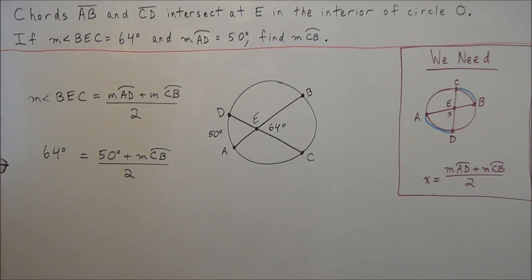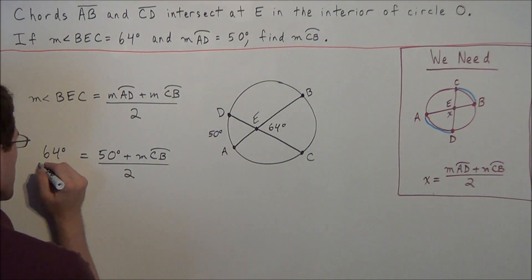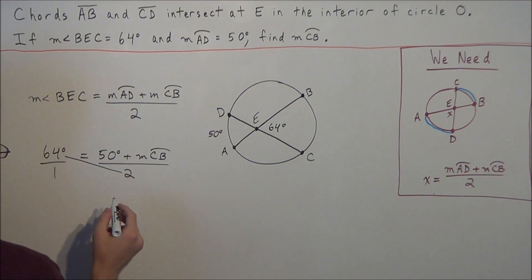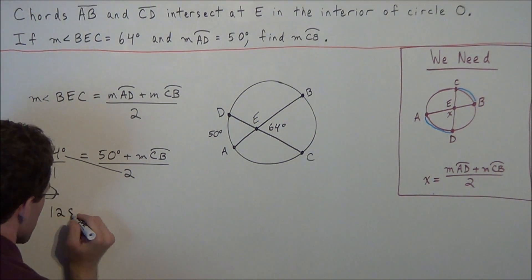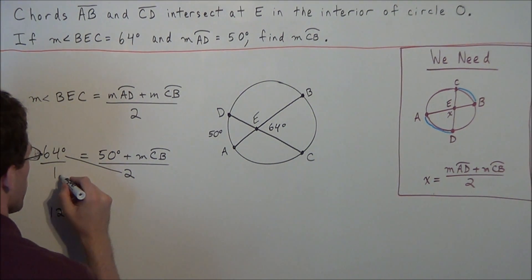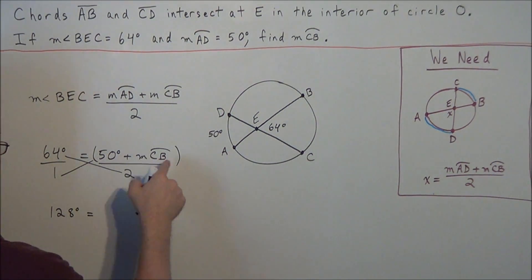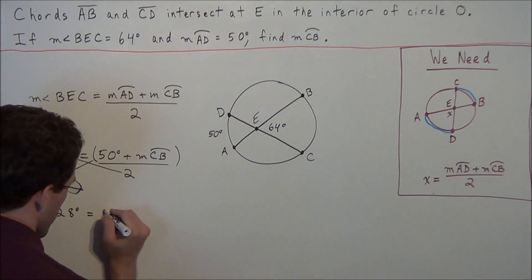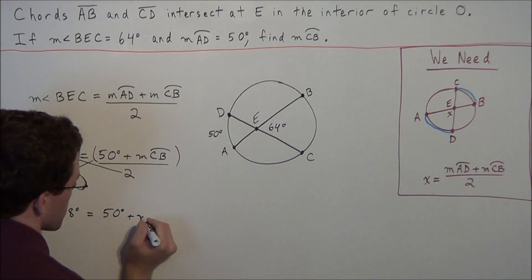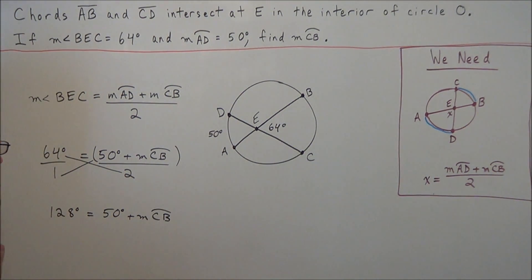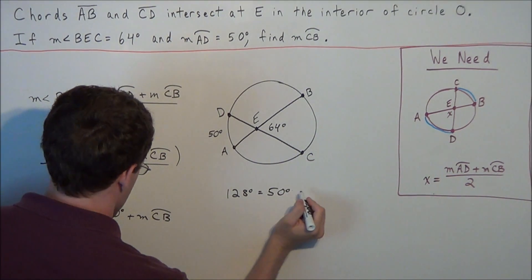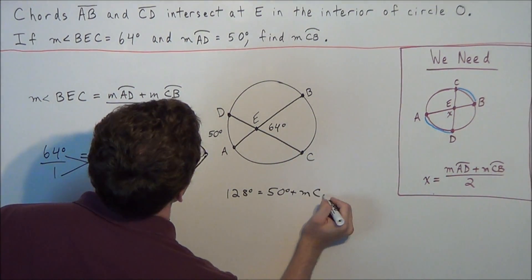To solve for the measure of arc CB, all we need to do is cross multiply. We treat 64 degrees as 64 degrees over one. So two times 64 degrees gives us 128 degrees, equals one times 50 plus the measure of arc CB. Since one is the identity element of multiplication, we rewrite this as: 128 degrees equals 50 degrees plus the measure of arc CB.